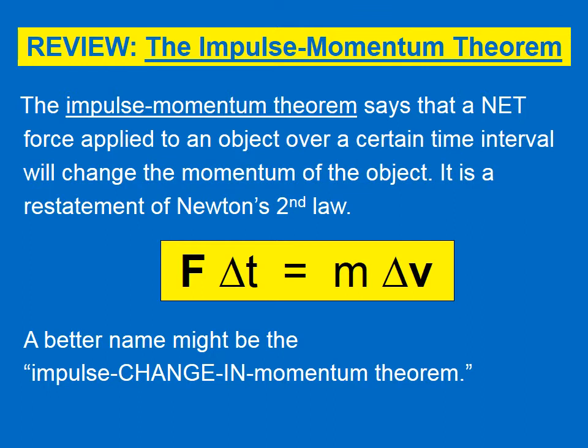Let's review. The Impulse Momentum Theorem says that a net force applied to an object over a certain time interval will change the momentum of the object. It is a restatement of Newton's second law. There's the equation: F times delta T is equal to M times delta V. The left side of this equation, F times delta T, is a term we call the impulse — hence the name Impulse Momentum Theorem. A better name might be the Impulse Change in Momentum Theorem.